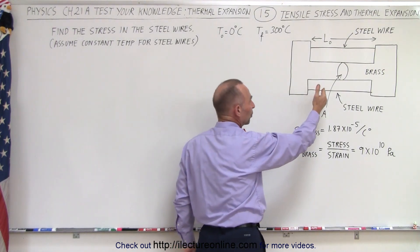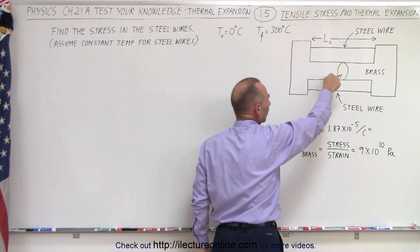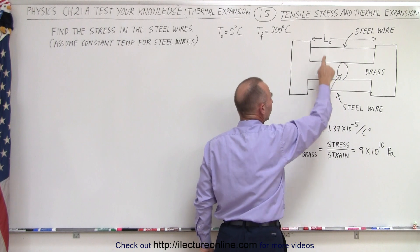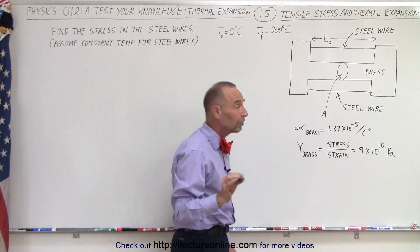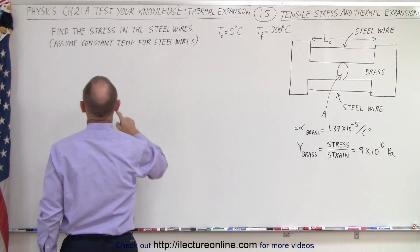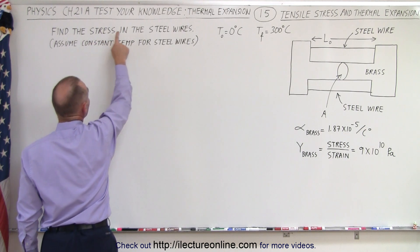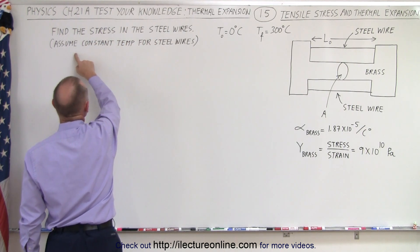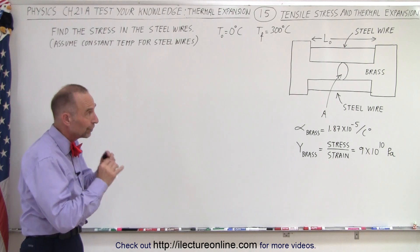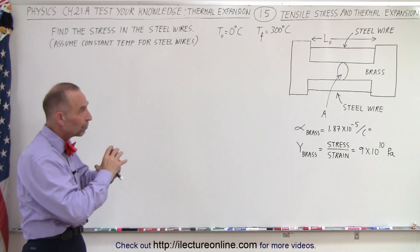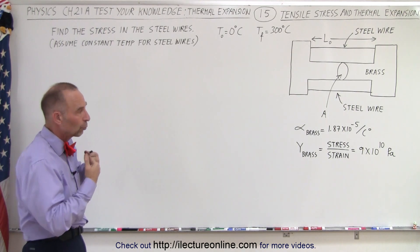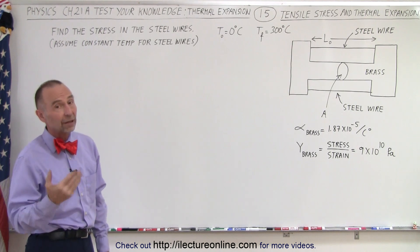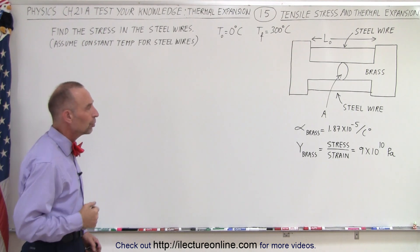Now stress is force per unit area. We don't know the cross-sectional area of the brass, we don't know the cross-sectional area of the wires, but the question asks the following: Find the stress in the steel wires, assume constant temperature for the steel wires. In other words, we don't need to know the cross-sectional area of the brass or of the wires because we're looking for the stress which by definition is force per unit area.